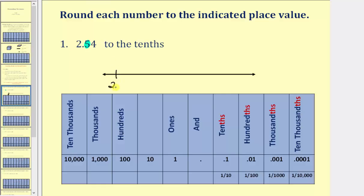Let's say 2.5 is here and 2.6 is here. What we know is that the middle would be 2.55, and we're given 2.54, which would be approximately here. So notice how, to the tenths place value, 2.54 is closer to 2.5 than it is to 2.6, which means we round down, and 2.54 rounds to 2.5 to the tenths place value.